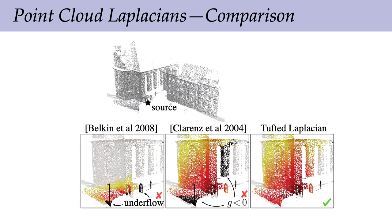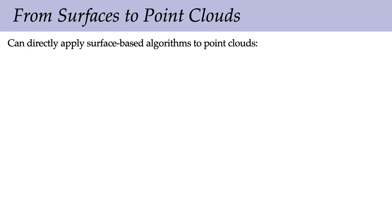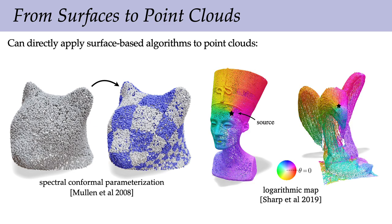As one comparison: we compute a harmonic Green's function, which shows up in a lot of geometry processing and shape analysis applications. Whereas past Laplacians exhibit underflow or negative values, we get the expected result of a well-behaved positive kernel. At a broader level, this construction provides a bridge between point cloud processing and mesh-based algorithms. Now that we have a nice edge-manifold mesh associated with our point cloud, we can just plug in well-known algorithms for surface parameterization, computing the log map, and whatever else we have.